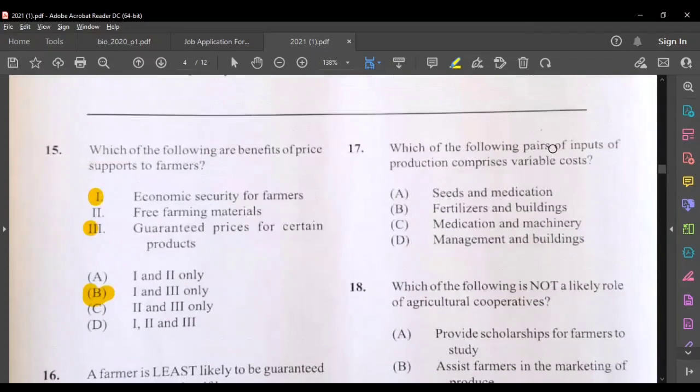Moving on to question seventeen, which of the following pairs of input of production comprises variable costs? Seeds and medication, fertilizers and building, not building. Medication and machinery, machinery would not be variable, that would be fixed. Management and building. So the suitable answer here would be A.